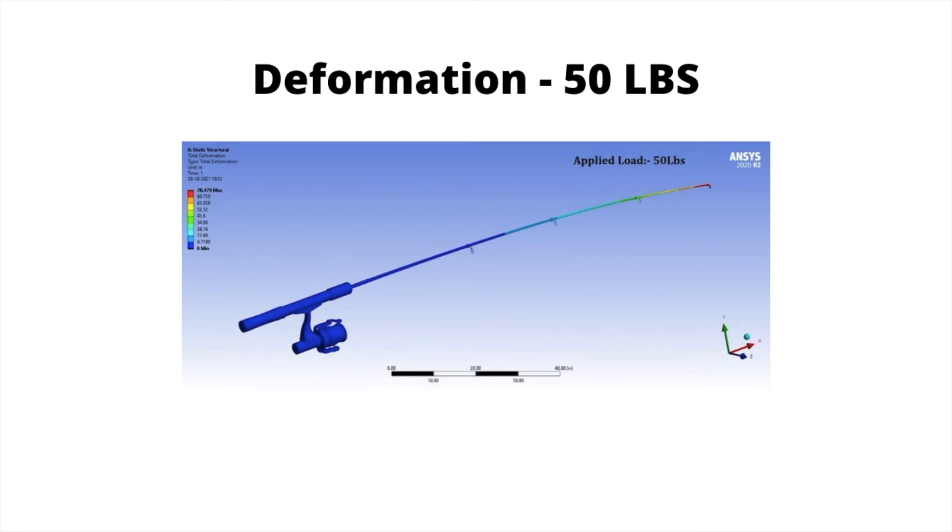Now, here is what the fishing rod looks like after catching a 50-pound tuna. Bam! As you can see, it's significantly deformed, and the load is significantly greater as a result of having a 50-pound fish on.